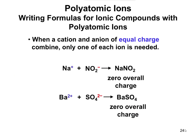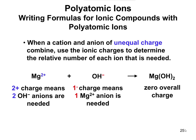Whenever you write formulas for compounds with polyatomic ions, it's the same rules as before. You name your cation, then your anion. For instance, barium with sulfate gives you barium sulfate. When your cation and anion have unequal charges, you have to use subscripts to balance things out. Magnesium is Mg 2+, hydroxide OH- is negative 1, so we need two OH minuses to balance. We write this as Mg(OH)2 — with parentheses.